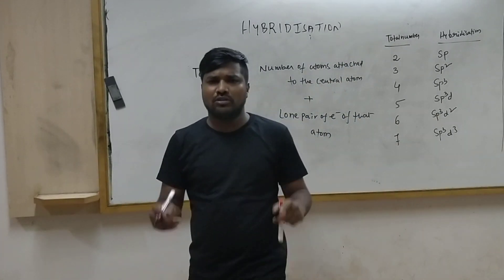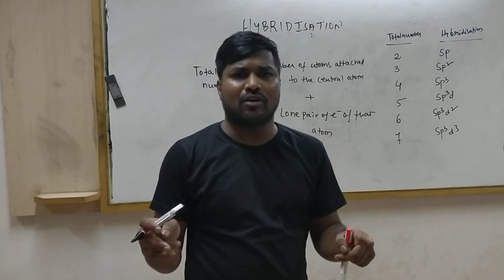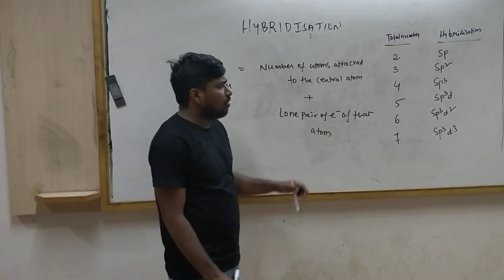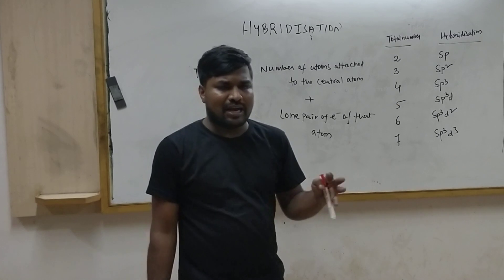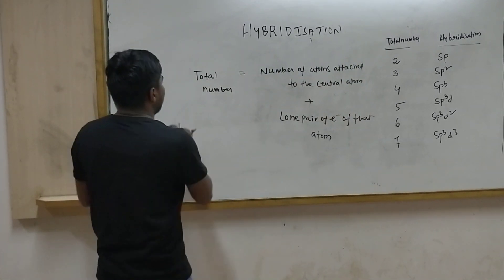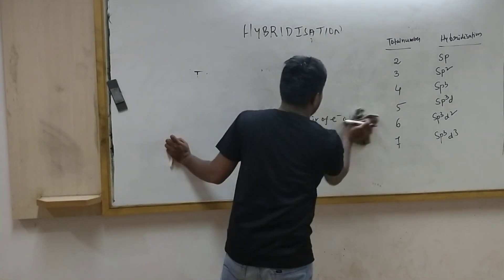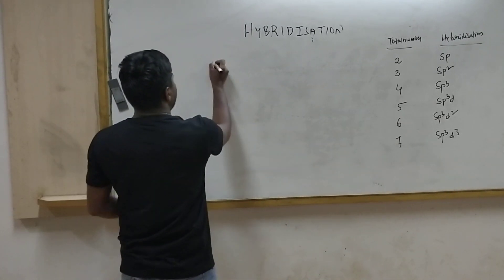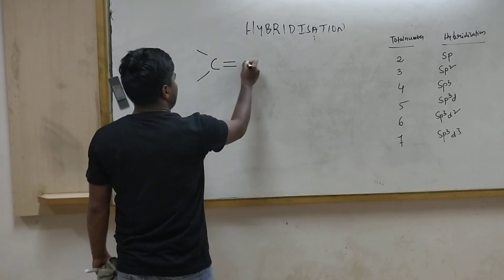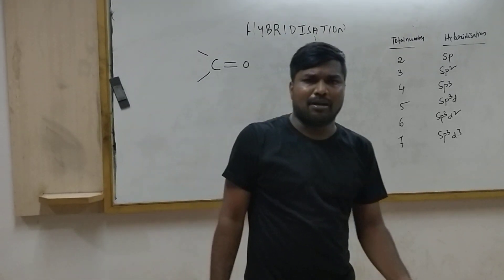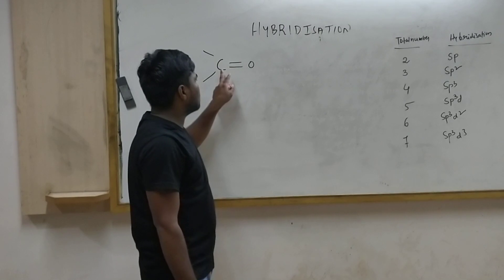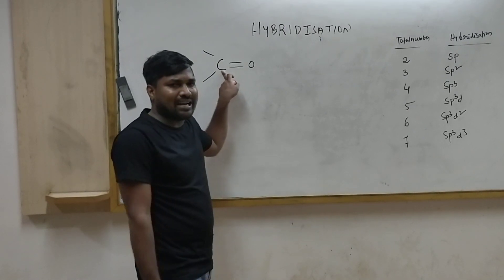If you know these two things, you can easily calculate the hybridization. We will go through examples so you can easily understand. Let's take the first example: find the hybridization of carbonyl carbon. Carbonyl carbon means C double bond O — we call it the carbonyl group — and we need to find the hybridization of the central atom carbon.